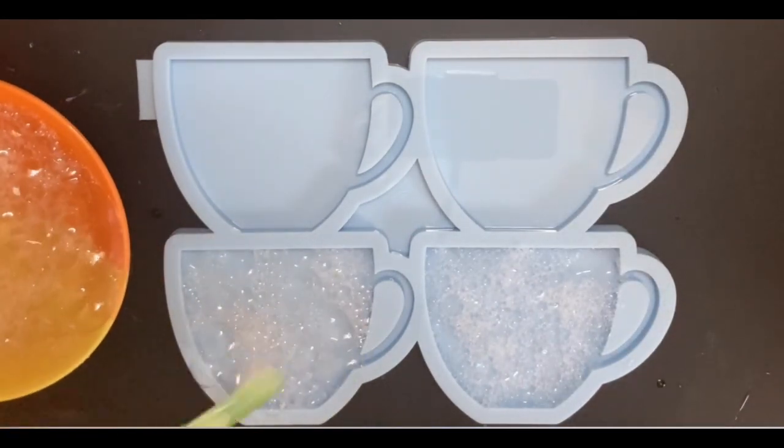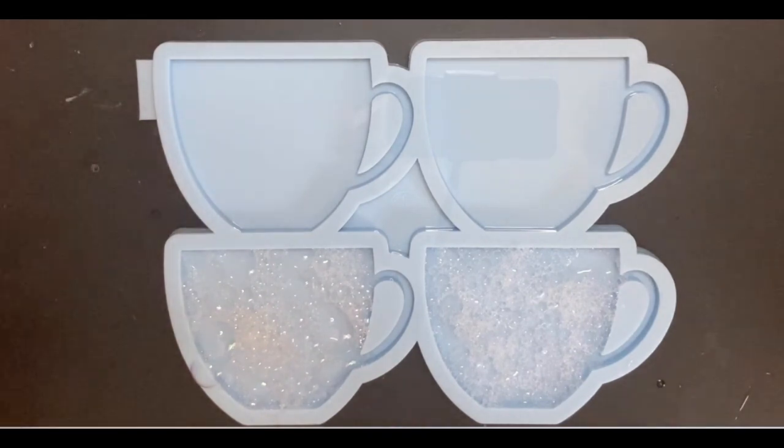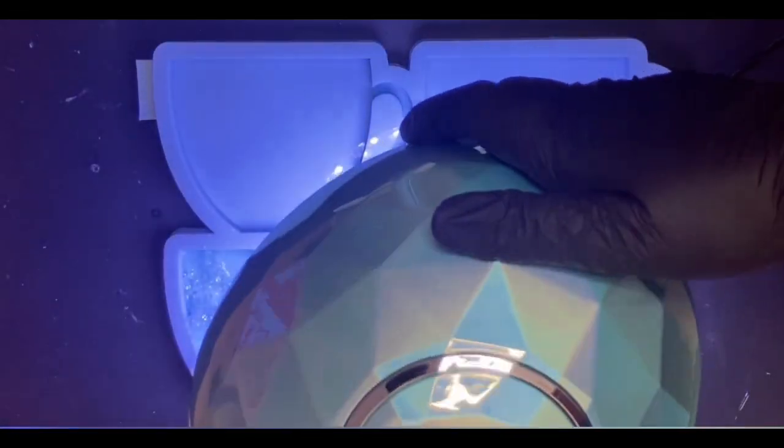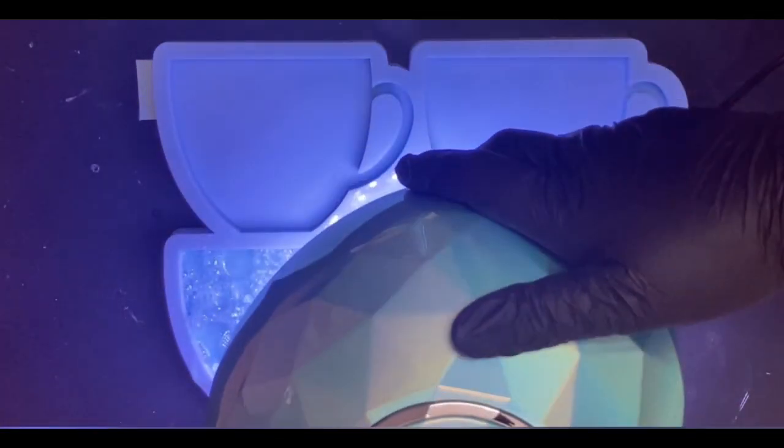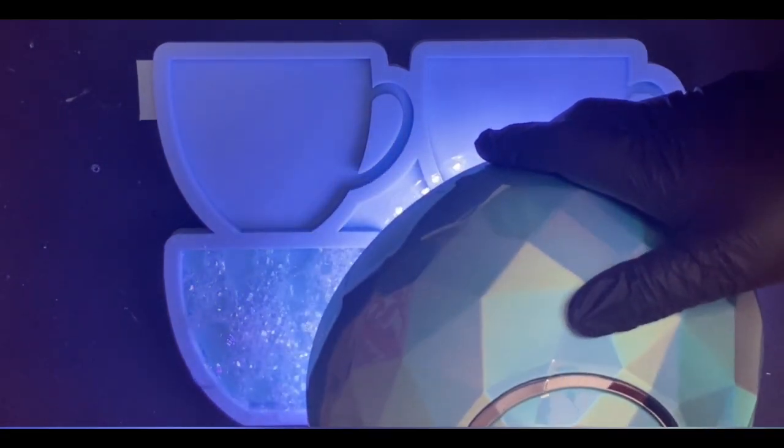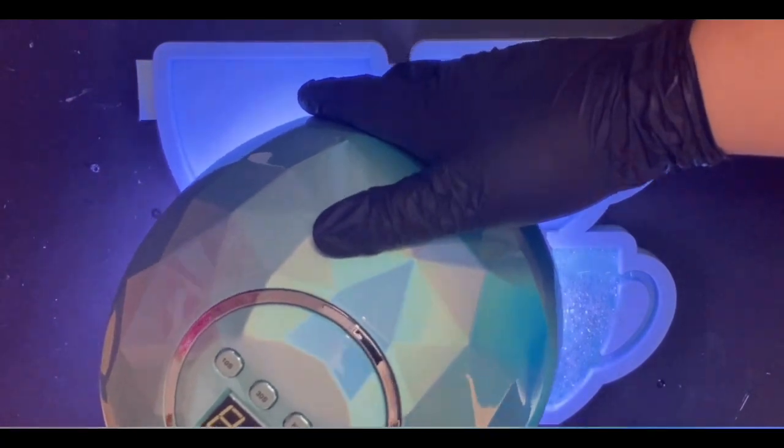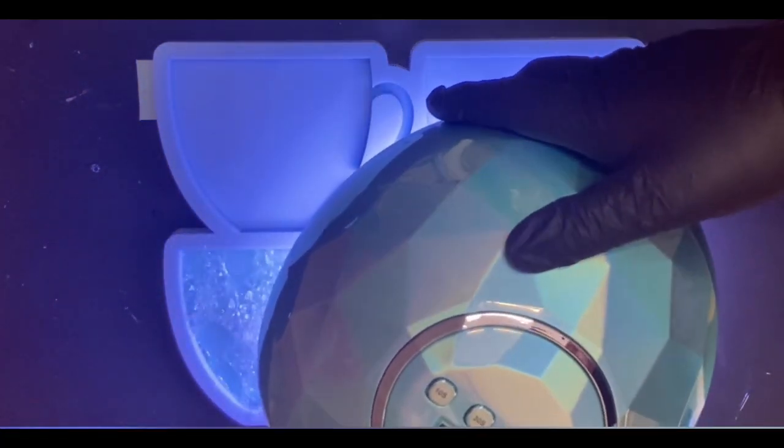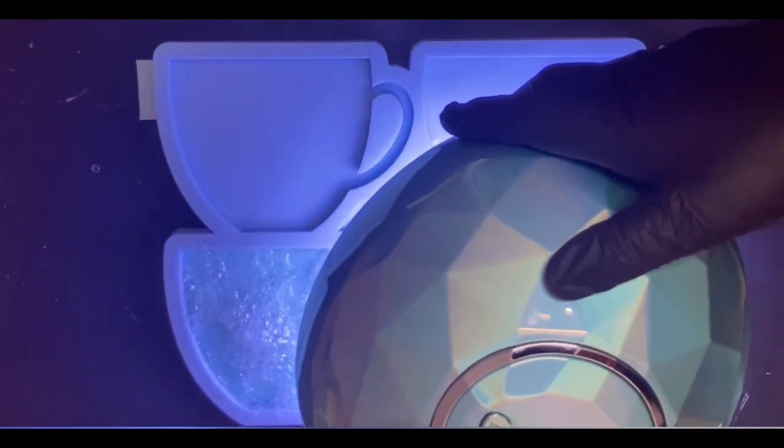And by the way, the cup mold is the cup coaster mold from Modes and Shapes. So there Sandra is using the UV lamp and it's looking like, it's funny how the color changed. I have never really used this and seen this. So for me, it's really great.